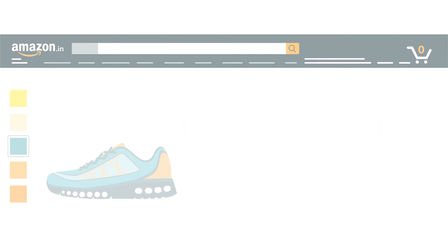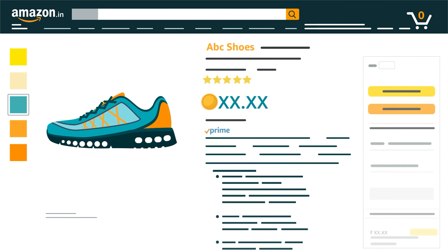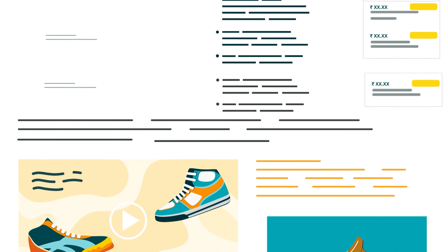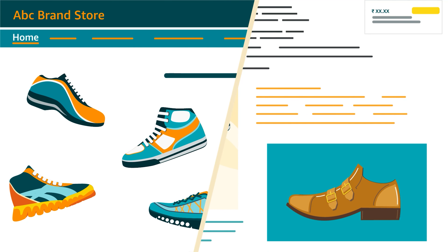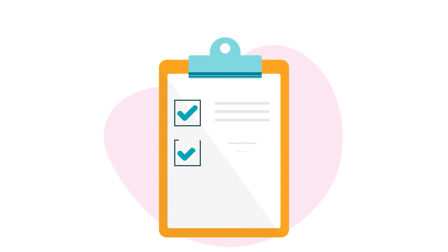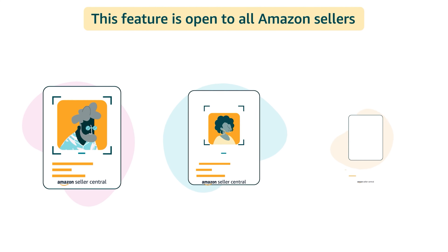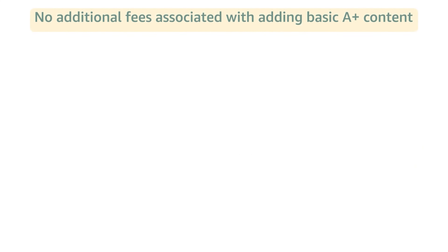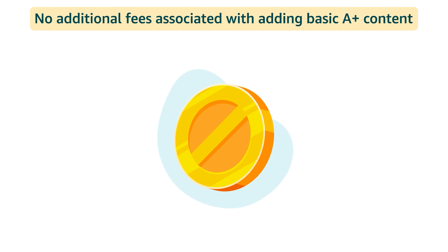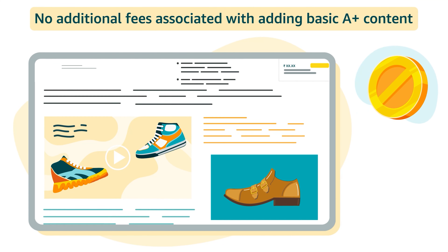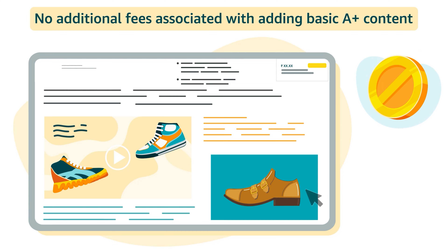This video will explain how to add A-plus content to the product description pages of your brand catalog and/or listings, along with recommendations of the associated best practices for creating such A-plus content. This feature is open to all Amazon sellers. There are no additional fees associated with adding A-plus content to the product description page of your listings if you choose to use basic A-plus content.